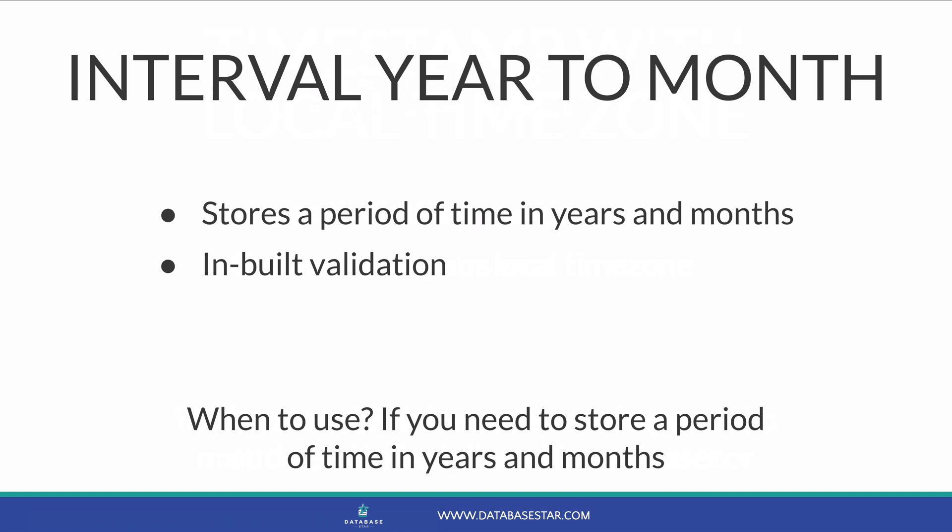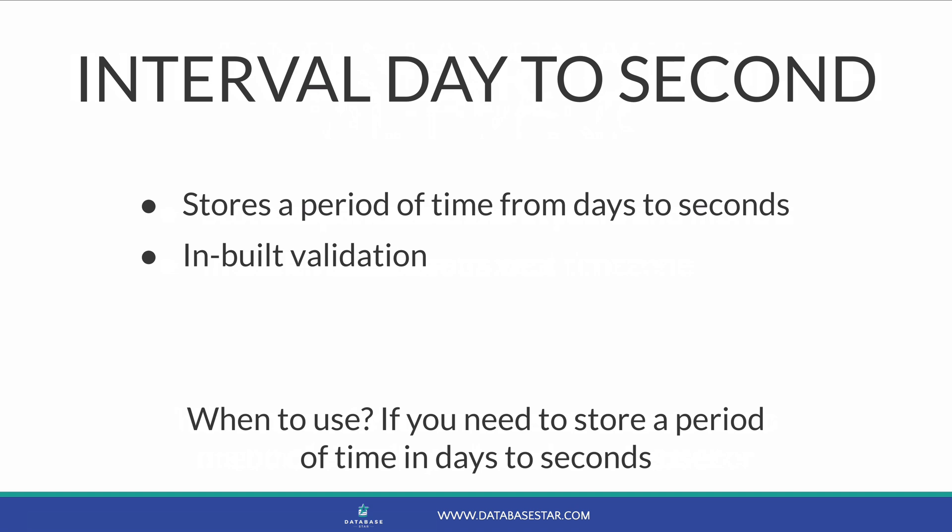The INTERVAL YEAR TO MONTH data type is one of two interval data types in Oracle. While other date types store a point in time, interval types store a period of time. INTERVAL YEAR TO MONTH stores a period that includes years and months — for example, three years and six months. If you need to store a period of time that includes years and months, use this type. The INTERVAL DAY TO SECOND data type stores an interval including days down to seconds, with built-in validation. Use it when you need to store a period of time that includes days, hours, minutes, or seconds.